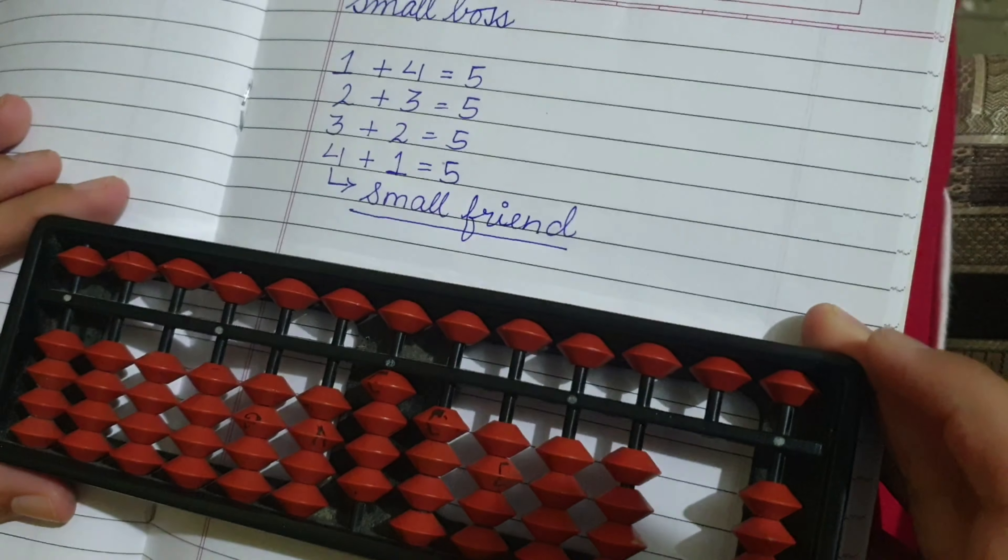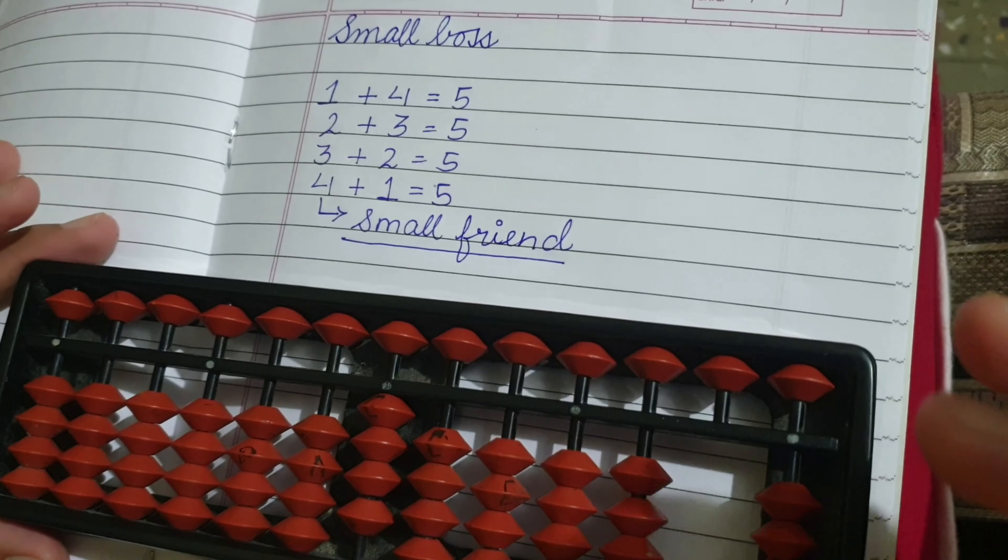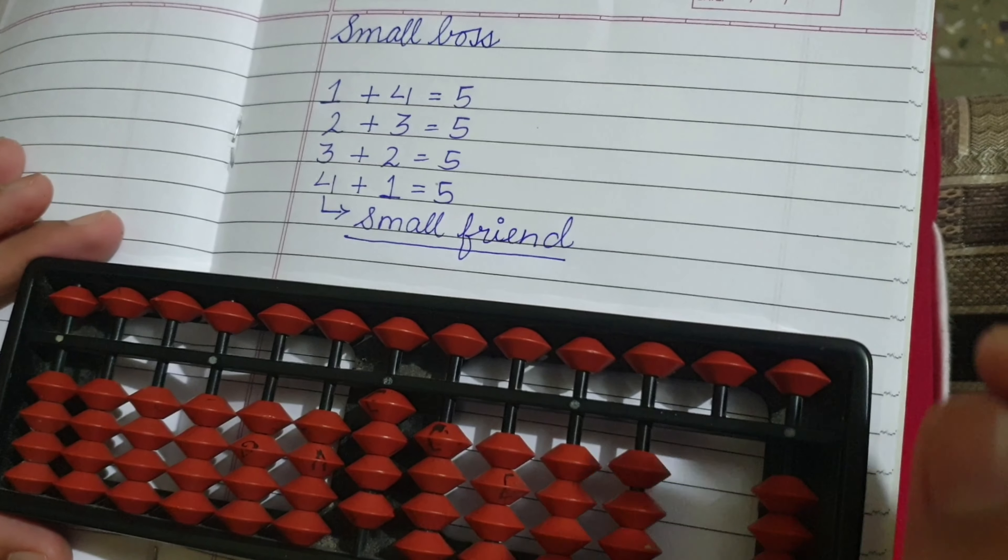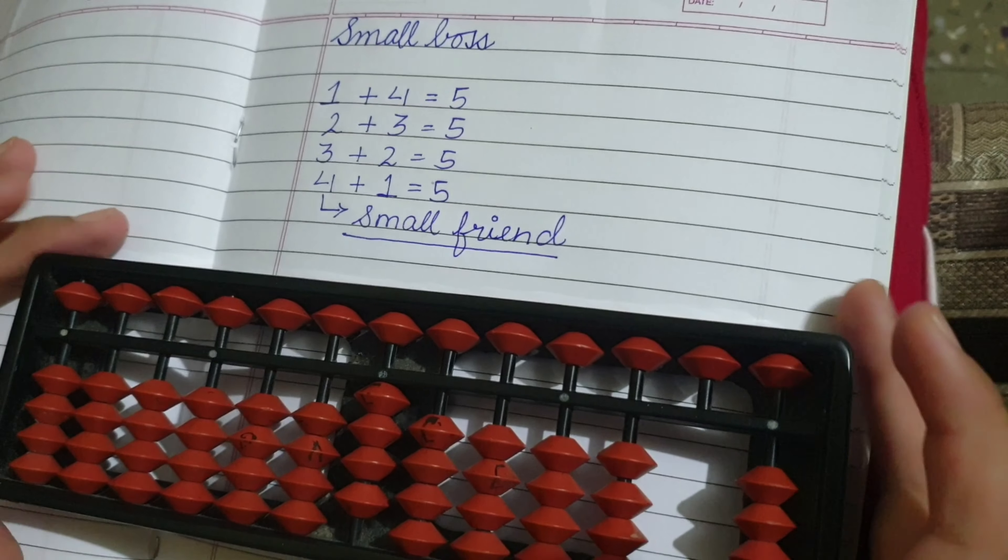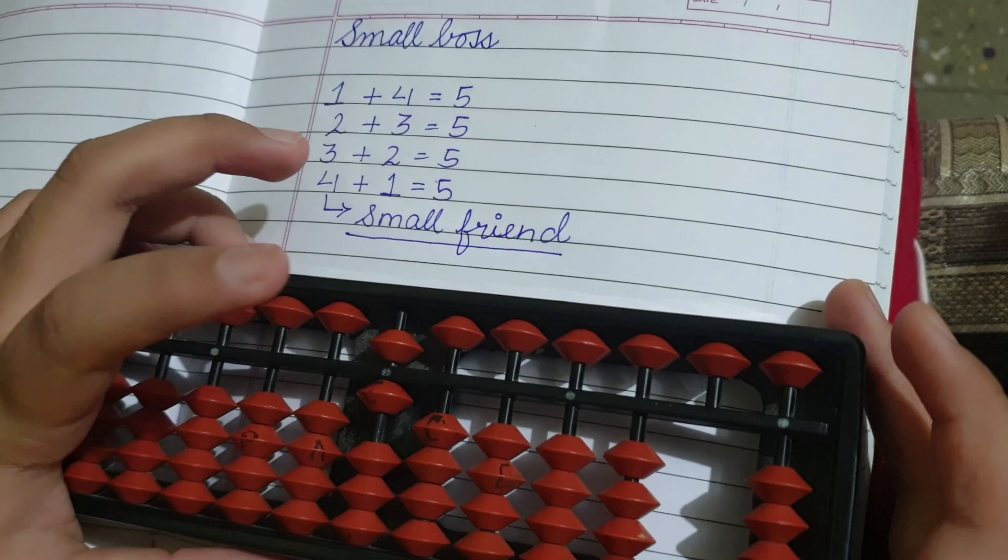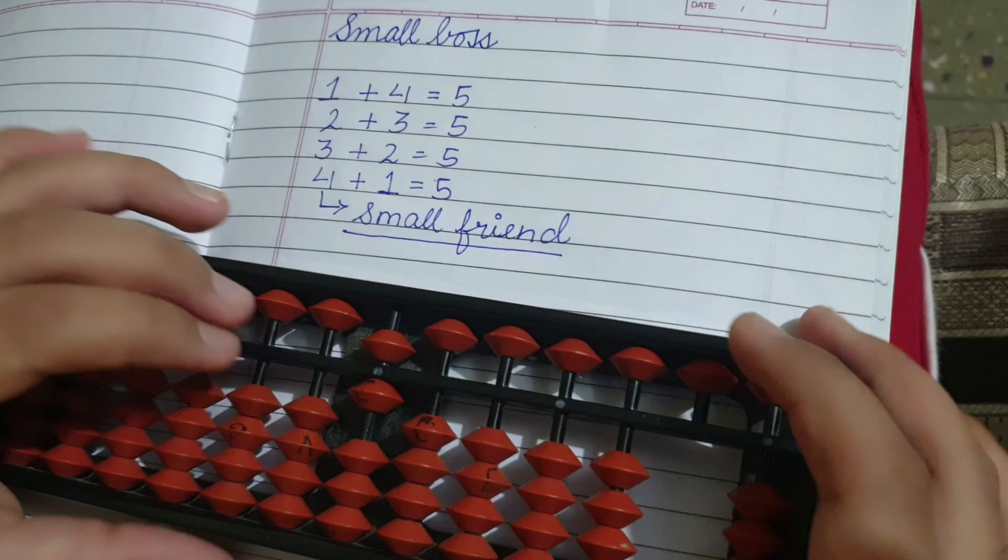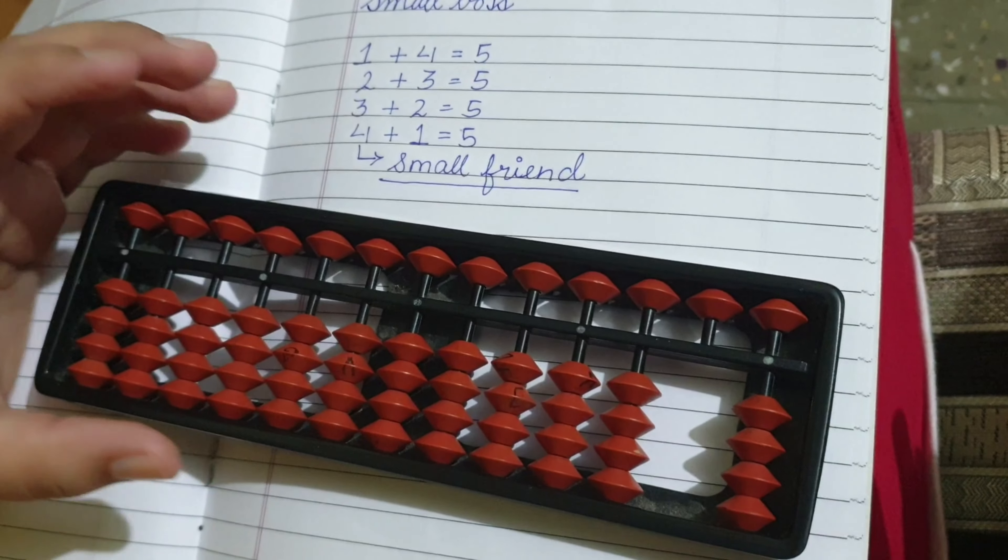In case we want to add 4 plus 2, we have 4 first. Now we want to add 2 to it. 2's small friend is 3, so we are going to subtract 3 from it and add a 5 at top. So the answer is 6. 4 plus 2 equals 6.